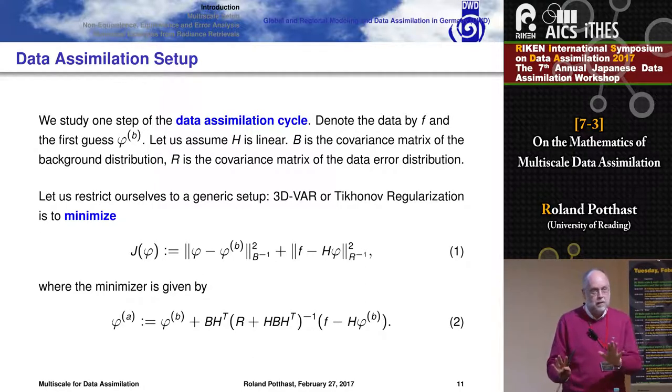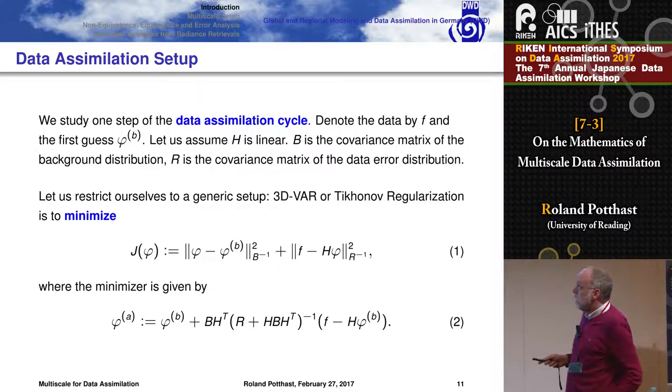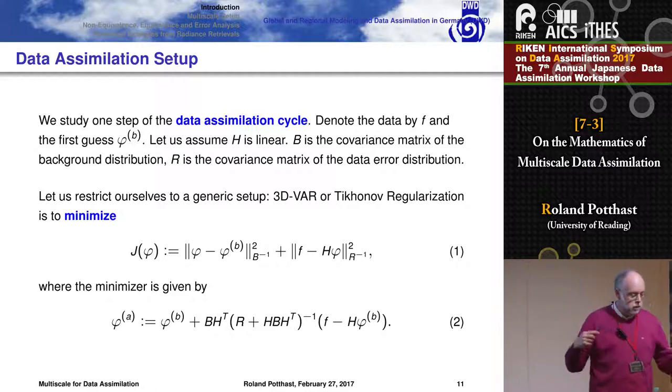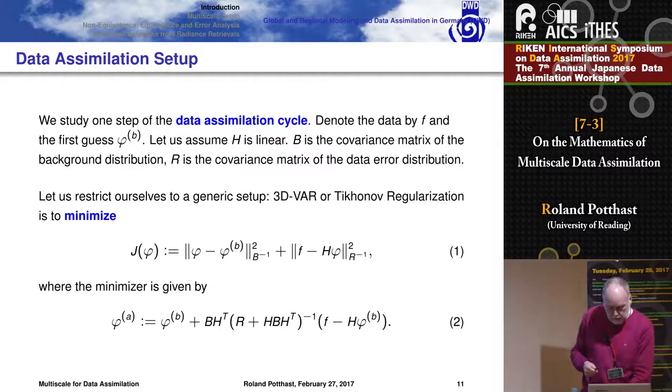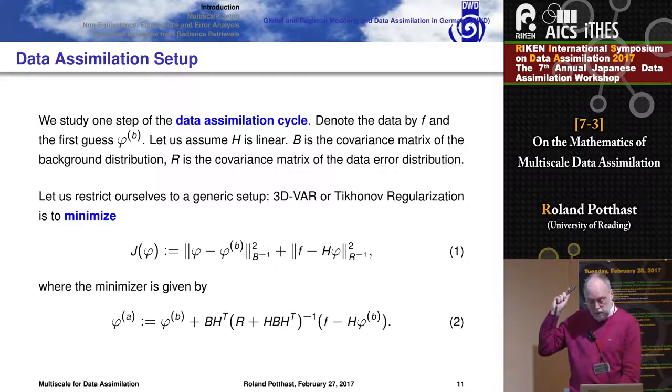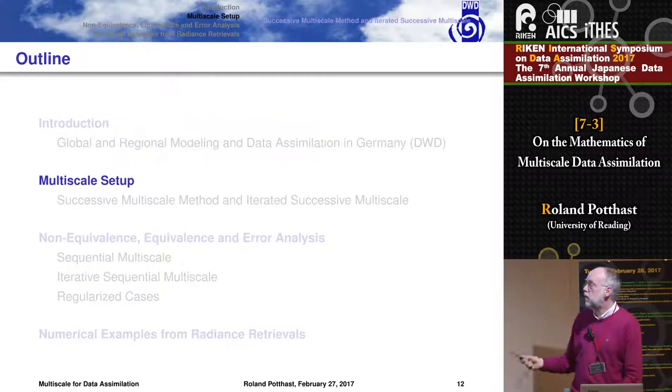Now I try to understand the data assimilation. I go to 3D-Var. I'm in several communities so sometimes I go from one notation to the other. It's basically what you know: here's the background functional, here's the data, F is the data, H is the observation operator. Think of it as linear for the moment. Here's the increment. The analysis is given by the background plus this typical update, 3D-Var physical space update. The idea is now if you do multi-scale, can you understand it in this framework?